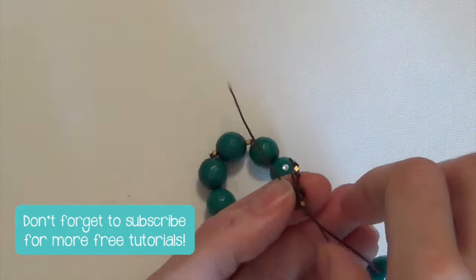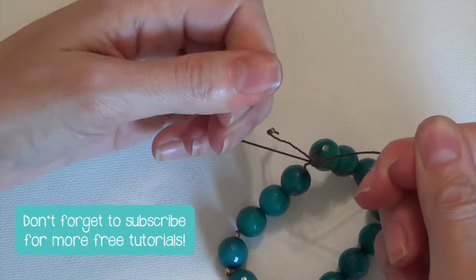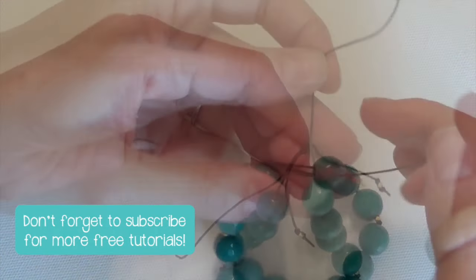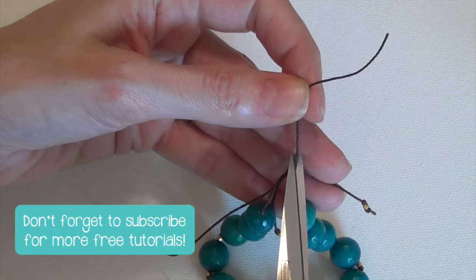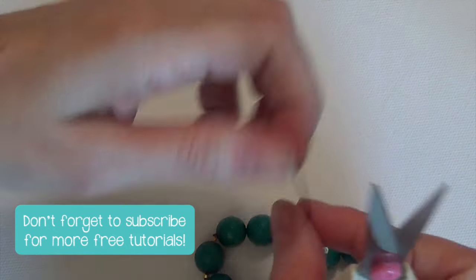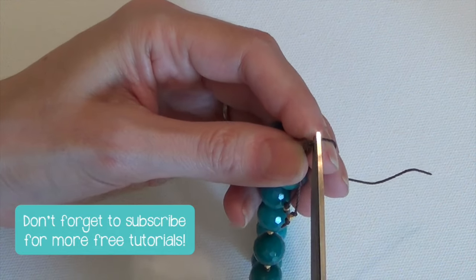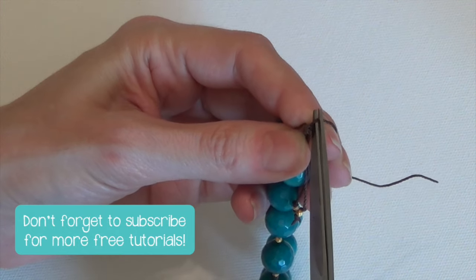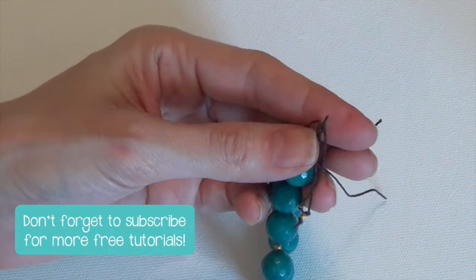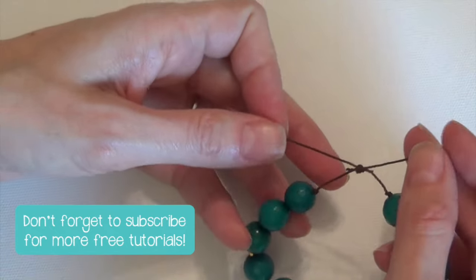And then pull both ends tight to tighten up the knot. Trim the excess cord about two millimeters away on each side, being careful to only cut that extra piece of cord. Now you've got a knotted cord bracelet that's an adjustable size with a sliding knot.